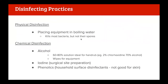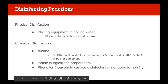Disinfecting practices address things that aren't visible, like bacteria. Physical disinfection includes boiling objects - boiling water kills most things but usually not bacterial spores. Chemical disinfection is the most common practice. For hand hygiene the ideal solution is a 60-80% alcohol solution used as hand rub. The solution used in clinical skills is a 2% chlorhexidine with 70% alcohol. We also use alcohol wipes for stethoscopes, iodine for surgical site preparation, and phenolic disinfectants for surfaces around the environment - though these cannot be used on skin.